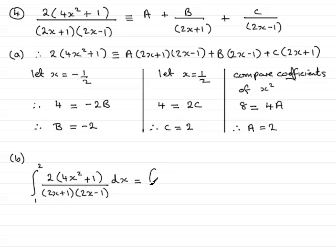So, I'm just going to write those partial fractions in. We're integrating them from 1 to 2, and we saw that this reduced down to A, which was 2, so I'll put that in. And then B over 2x plus 1, and B was minus 2, so it's minus 2 over 2x plus 1. And then plus C over 2x minus 1, and C was 2, so that's going to be plus 2 over 2x minus 1.